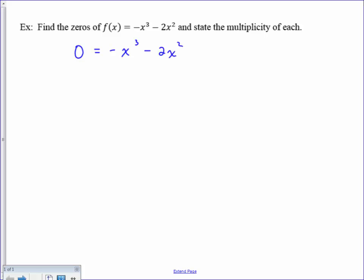To solve this, here I could factor out a negative x squared. That would leave me with a positive x, and then a positive 2.